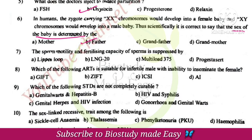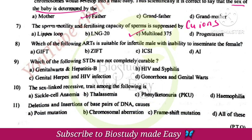The sperm motility and fertilizing capacity of sperm are suppressed by copper ions in the copper-releasing IUD, Multiload 375.